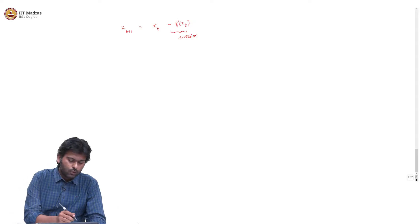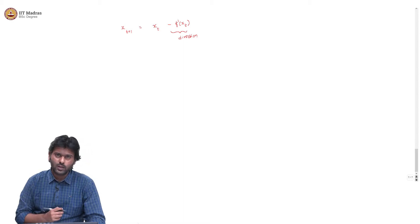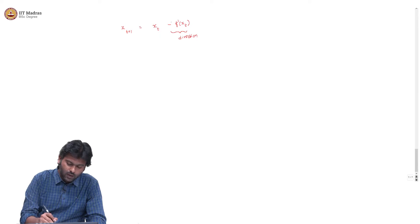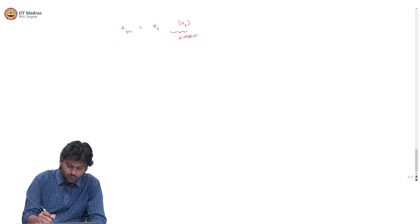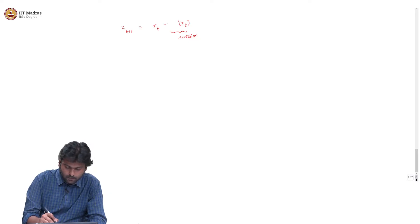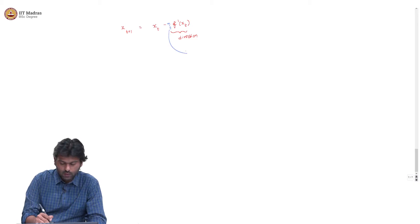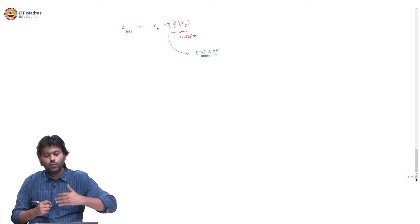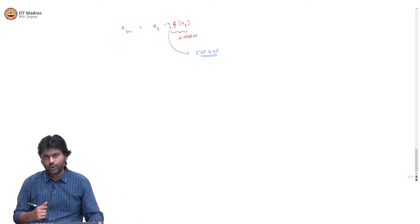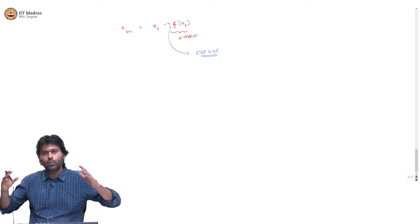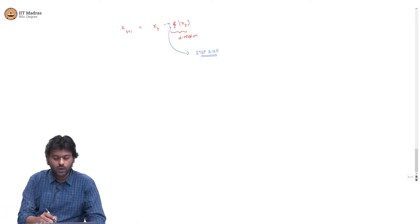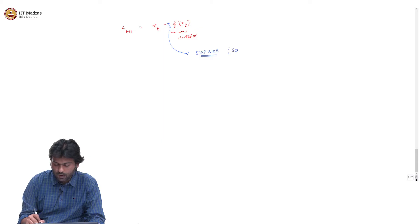One way to fix this would be to decide how much you want to move in this particular direction. We are going to multiply a scalar value, which we will call the step size. So you want to take one step in the direction of minus f'(x_t), and that is what eta_t is going to do. This is a scalar quantity, and it is positive.